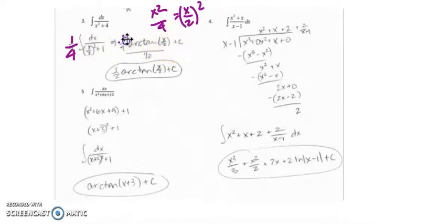I have this 1 fourth out in front, and then that 1 fourth came from here. And when I integrate with the chain rule, I have to divide by the derivative of my inside function, which is this 1 half. So 1 fourth over 1 half simplifies to 1 half.